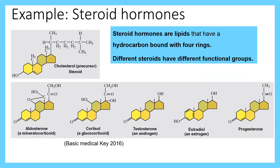Steroid hormones have a hydrocarbon band of four rings. In the first image you can see four rings with groups consisting of only hydrogen and carbon. Other examples of steroid hormones include aldosterone, which regulates sodium levels; cortisol, the stress hormone; testosterone; oestrogen; and progesterone. In all of these you can see the basic four-ring structure, but they vary in terms of their different functional groups.